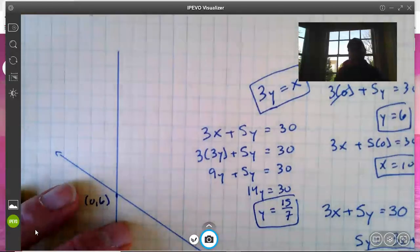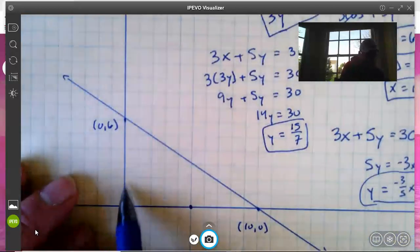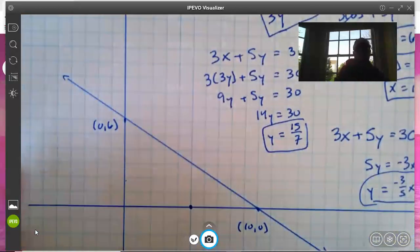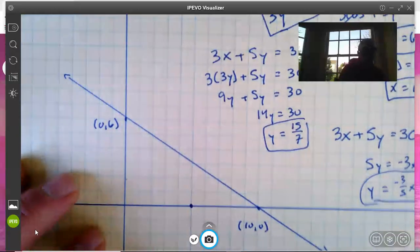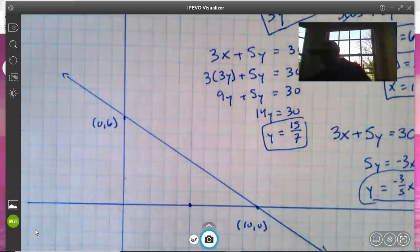So now we've got to find out the x-coordinate for that point. We know that we're going to be somewhere right around here. Now we're going to find the x-coordinate by substituting 15/7 for y. I might want to get my fraction calculator out here for this.